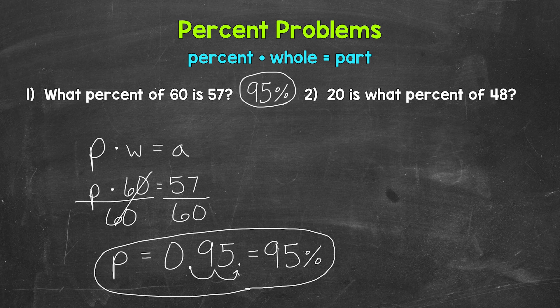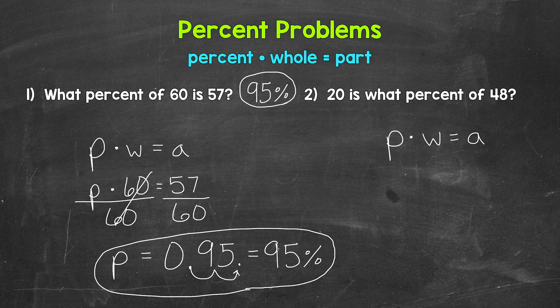Let's move on to number two: 20 is what percent of 48. The wording is a little different here, but it's the same type of problem. Writing out our equation — percent times whole equals part — and plugging in: 20 is the part, what percent means the percent is unknown, and of 48 means 48 is the whole. So we keep the variable P times the whole, which is 48, equals the part, which is 20.